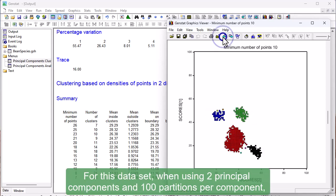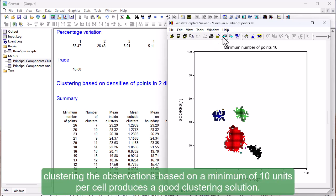For this dataset, when using two principal components and 100 partitions per component, clustering the observations based on a minimum of 10 units per cell produces a good clustering solution.